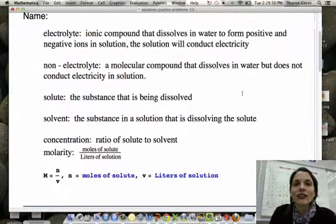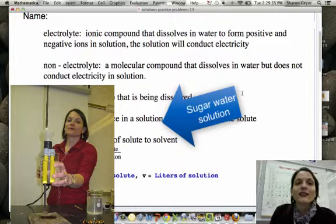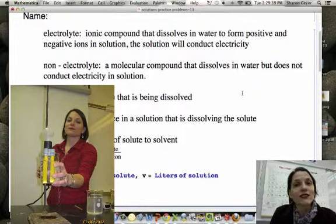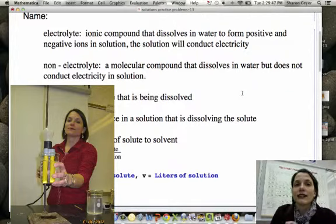A non-electrolyte is a molecular compound that can dissolve in water, but does not conduct electricity in solution. So therefore, with our conductivity tester, no light bulb. Because it does not form any free-flowing ions. It stays together as a complete molecule, like the sugar water.